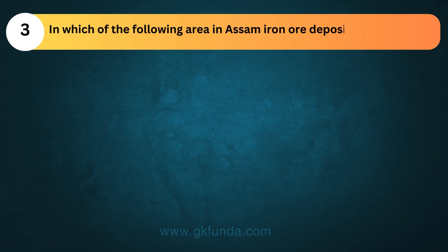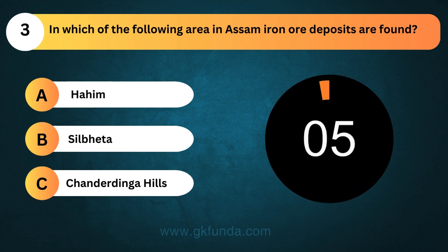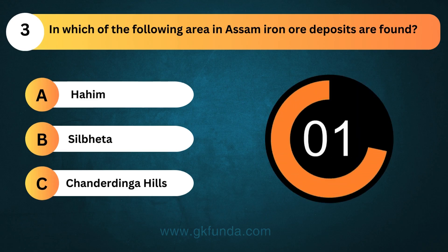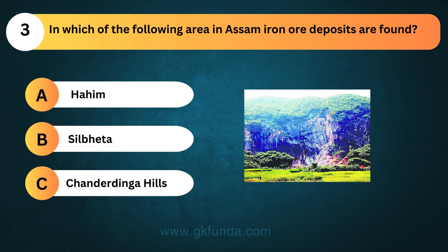In which of the following areas in Assam are iron ore deposits found? The answer is option C, Chanda Dhinga Hills.